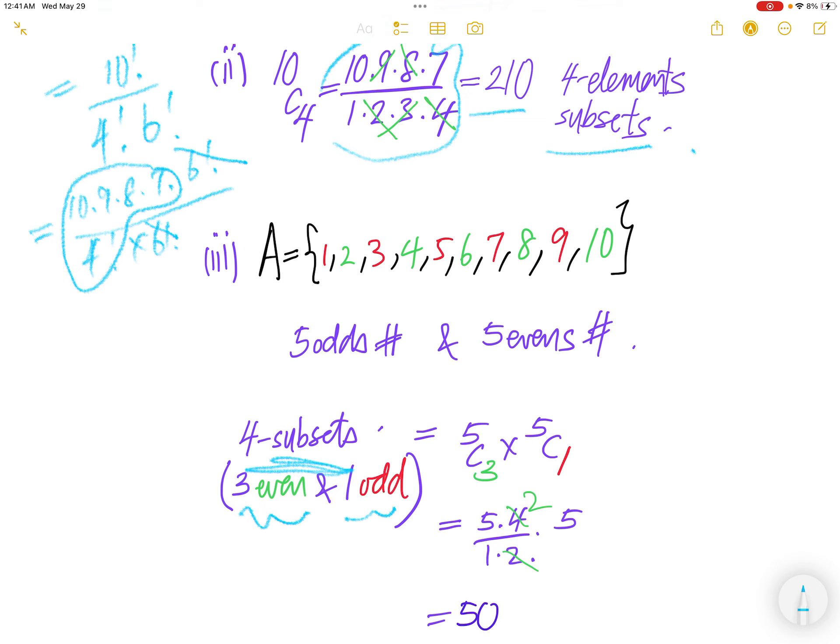Let's see how we can get 3 even. Since we have 5 even, to get 3 even is 5 choose 3. To get odd, we have 5 odds. To get 1 odd, 5 choose 1.